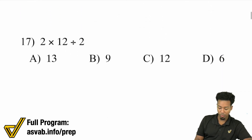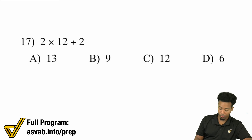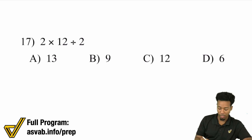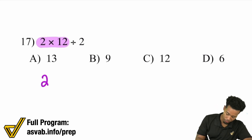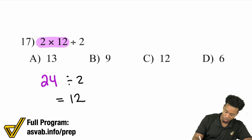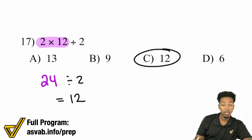Number 17: We have 2 times 12 divided by 2. Multiplication and division are the same operation, so you're just going to read this left to right. 2 times 12 is going to be 24. And then from there, we're going to divide by 2. 24 divided by 2 equals 12. And that's C.